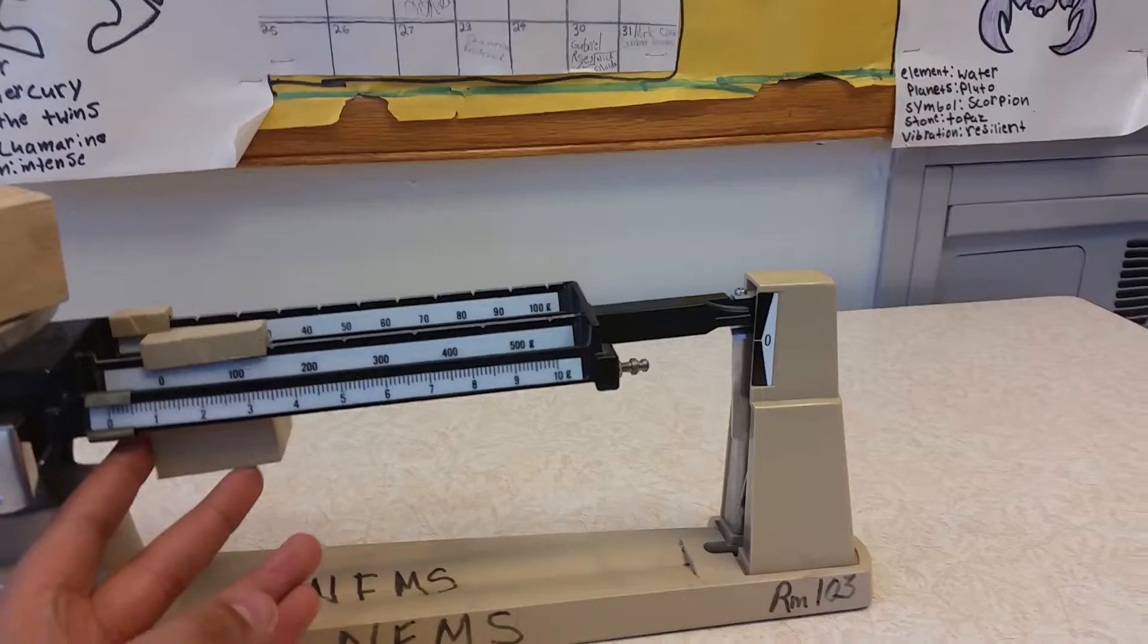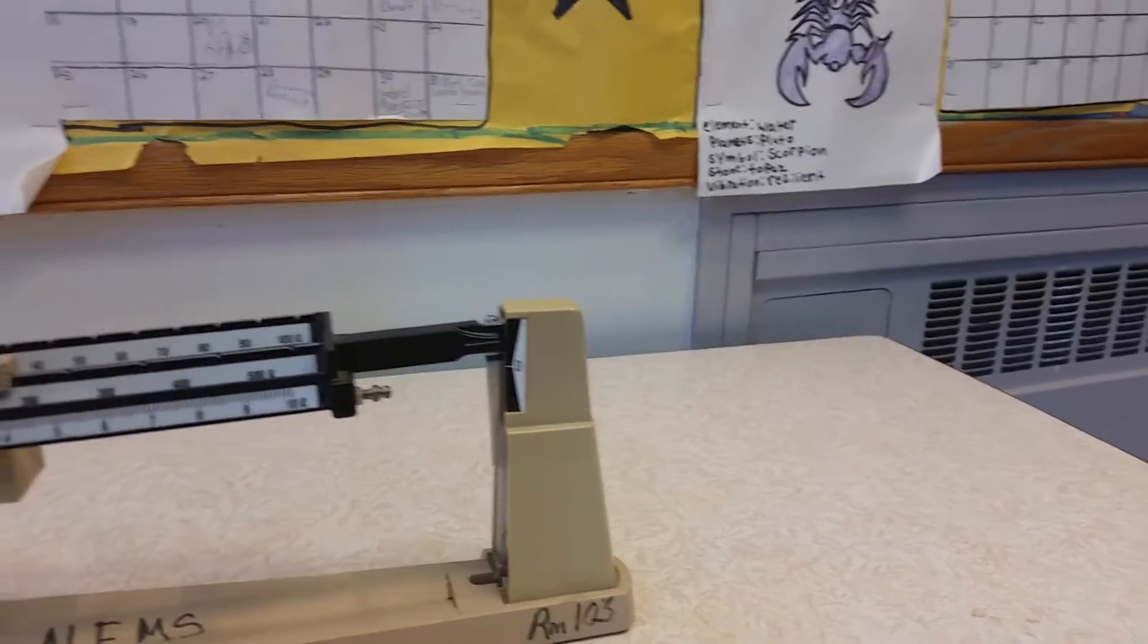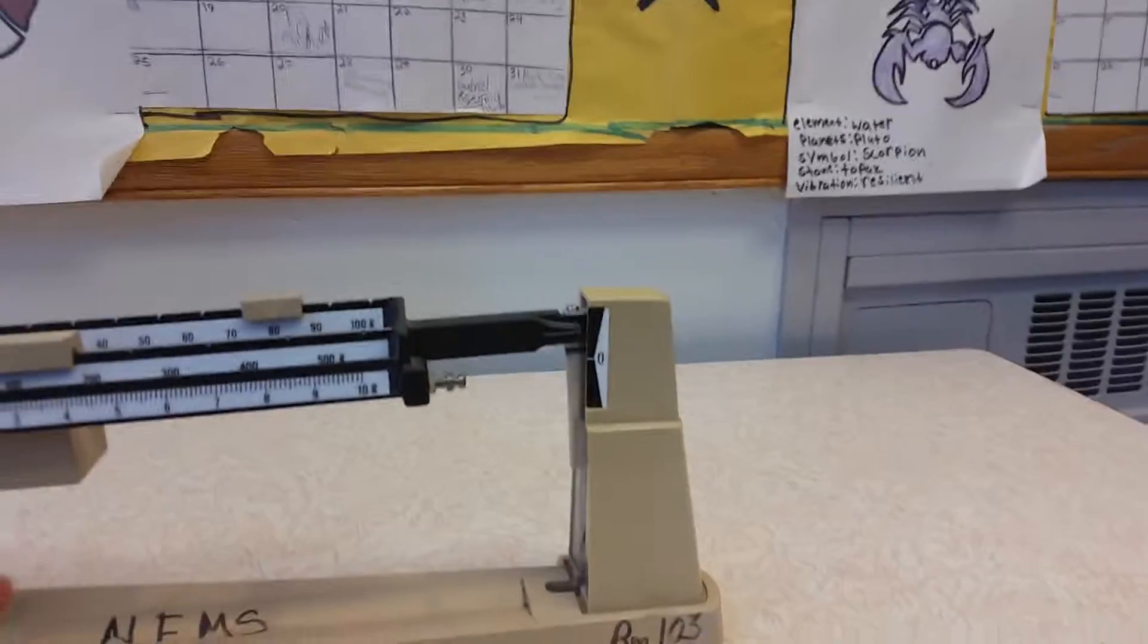Begin with the largest rider, then go to the one in the far back, then go to the one in the front.